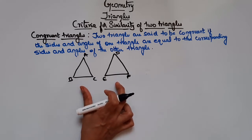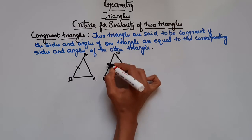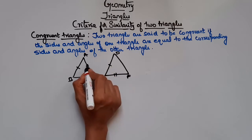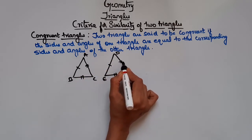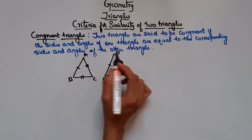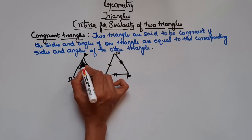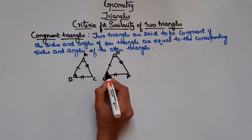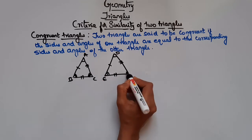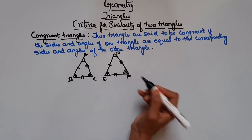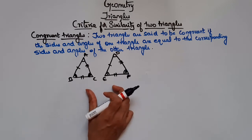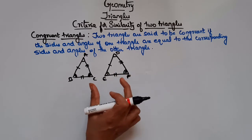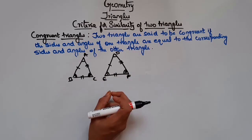These two triangles are said to be congruent if side AB is equal to DE, side BC is equal to EF, side AC is equal to DF, and also their angles: angle A is equal to angle D, angle B is equal to angle E, and angle C is equal to angle F. If it satisfies this condition, then these two triangles are said to be congruent triangles.